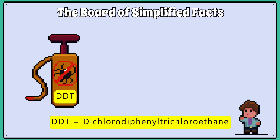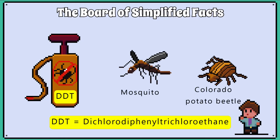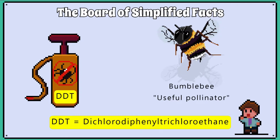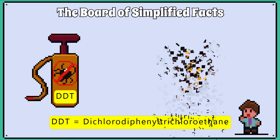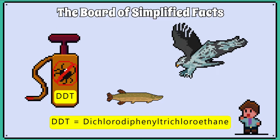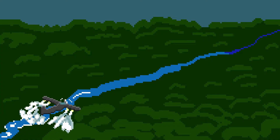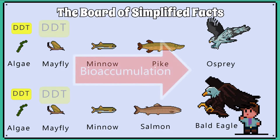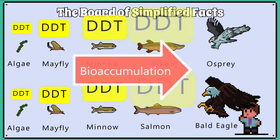DDT was a pesticide used to kill mosquitoes to reduce the spread of malaria and insects that fed on agricultural crops. It was very effective at killing pests, but there was evidence that it was killing untargeted insects that may be useful pollinators, and the effects of DDT were seen to be affecting animals higher up the food chain. Once DDT entered waterways and food chains, it bioaccumulated just in the same way as mercury did.